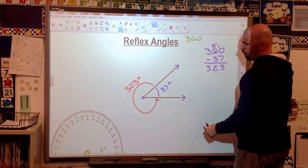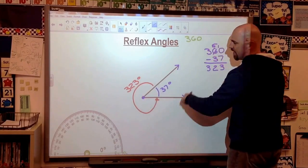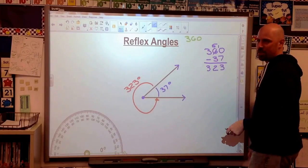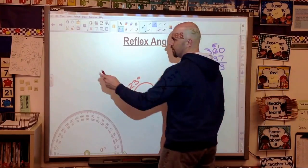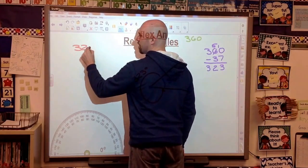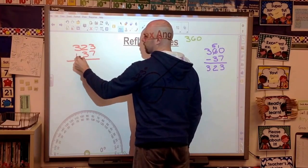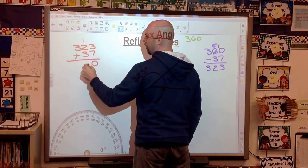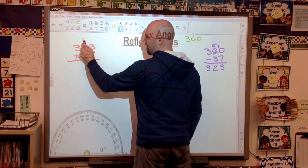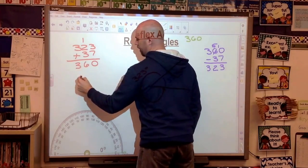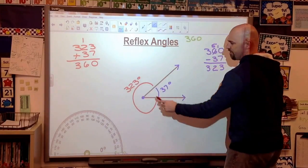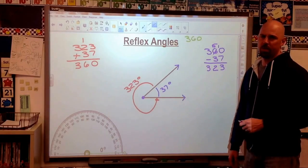And to double check that, remember what we said. If we add these two pieces together, that's a complete circle. That should add up to 360. So let's do that real quick. 323 plus 37. Zero down, carry the 1. 5, 6. 360. So this reflex angle is 323 degrees.